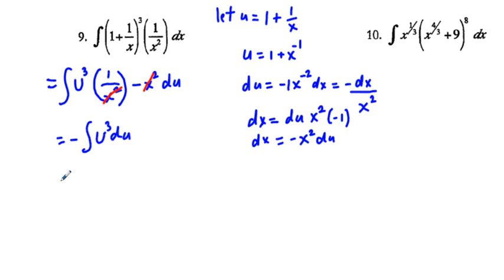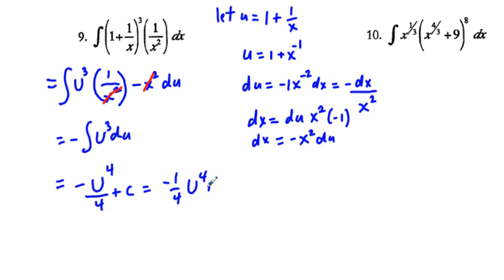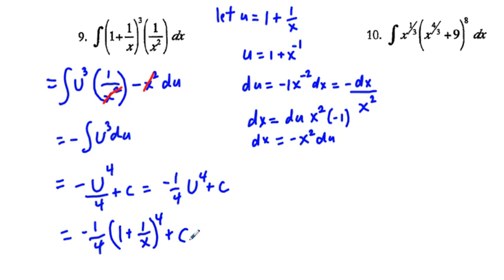That's straightforward: negative u to the power 3 plus 1 is 4, divided by 4, plus C, which equals negative one-fourth u to the fourth plus C. Substituting back, since u equals 1 plus 1 over x, the answer is negative one-fourth times (1 plus 1 over x) to the fourth plus C. That's a nice problem. Good luck on the rest — I hope this has been helpful, thanks for viewing.